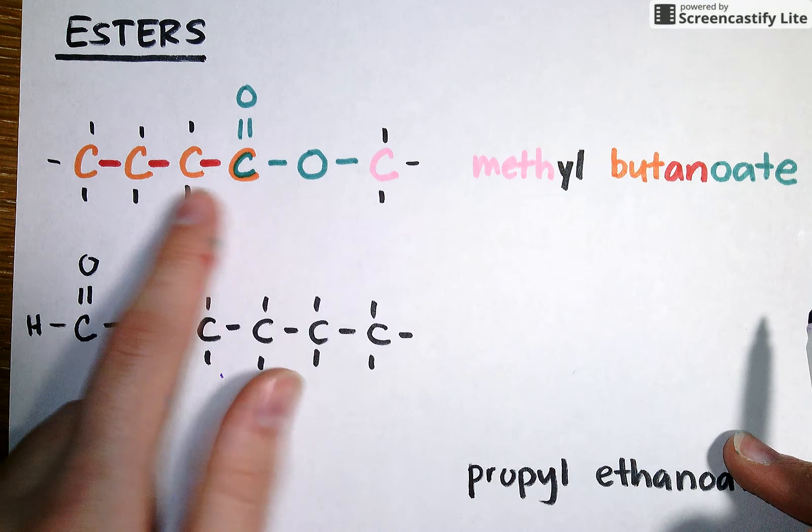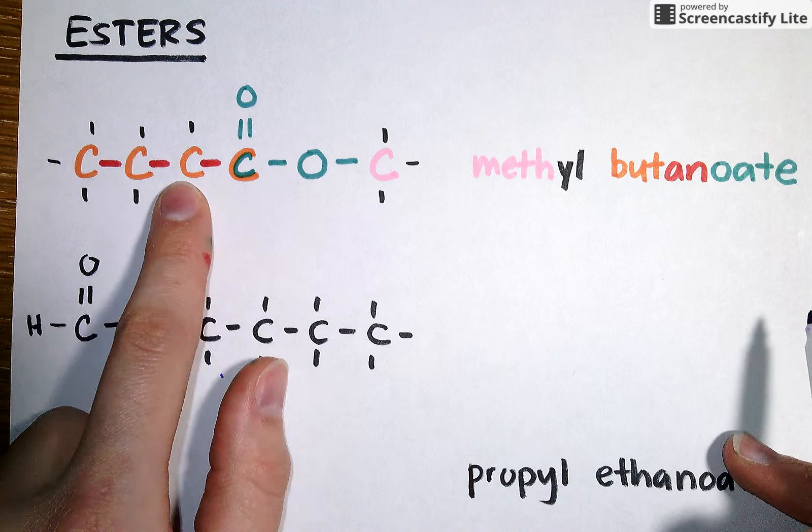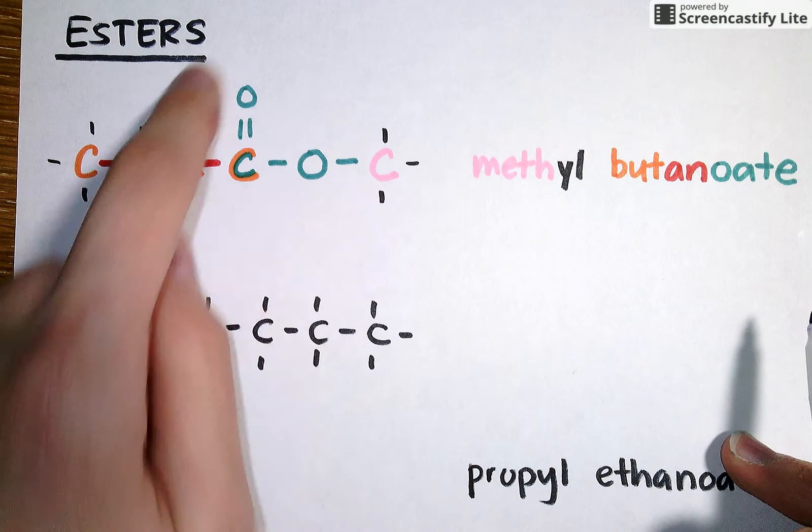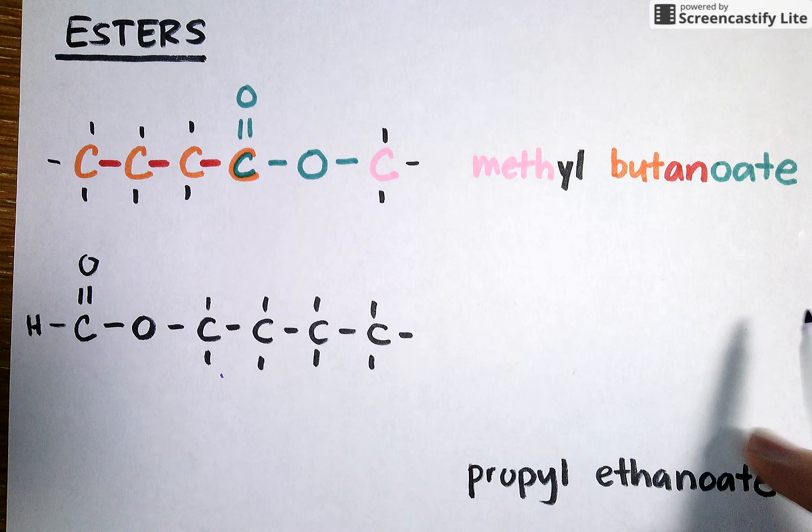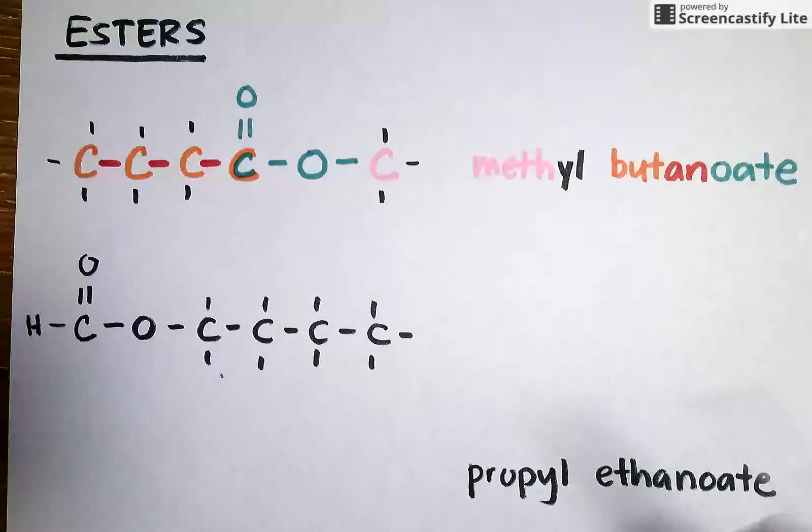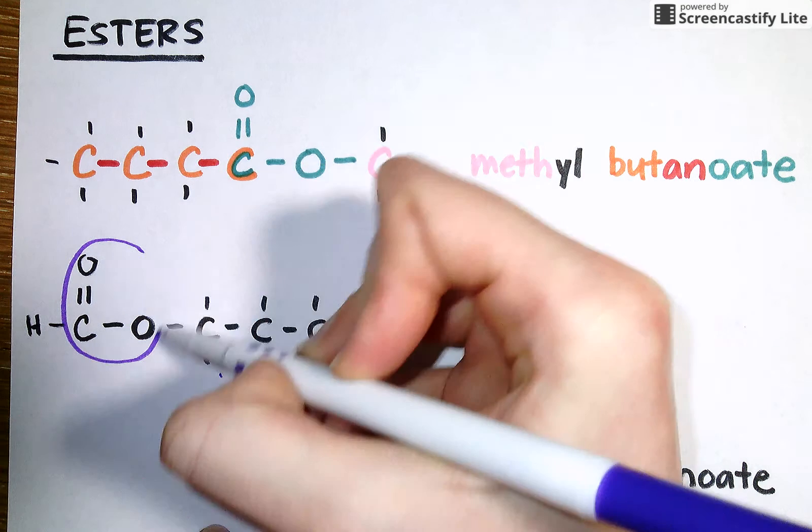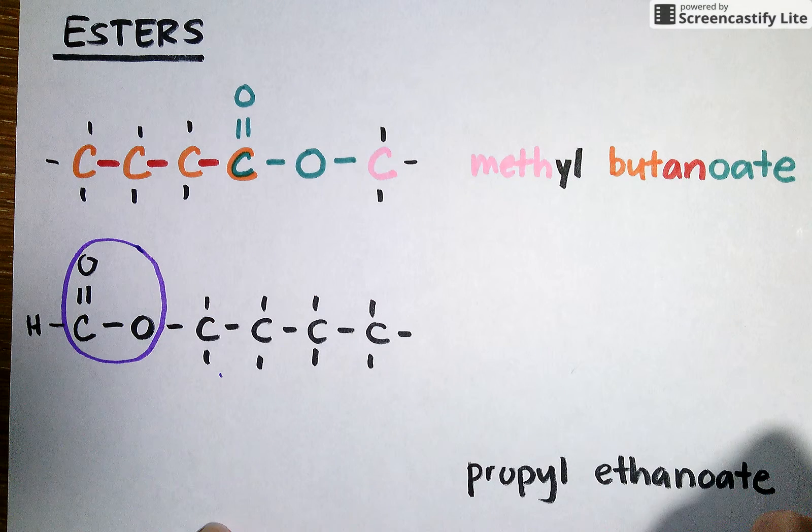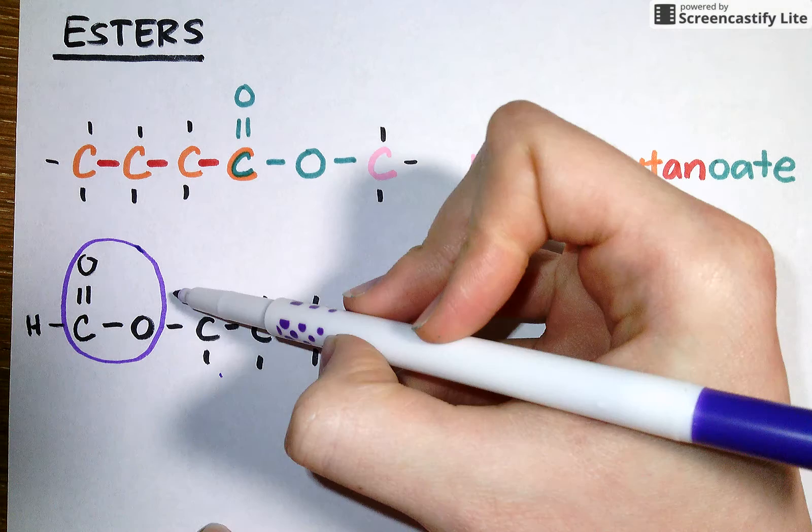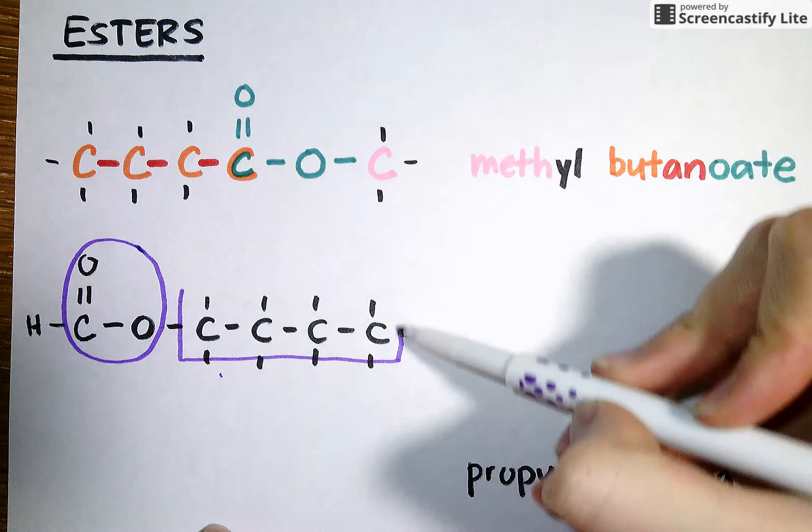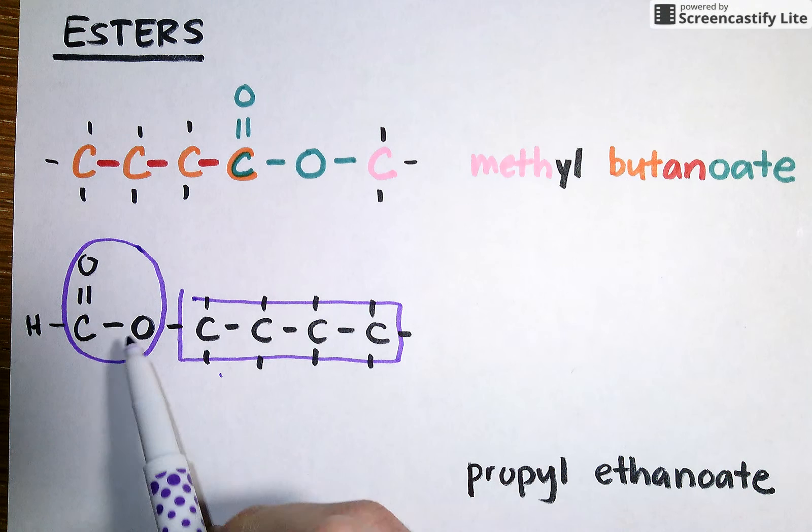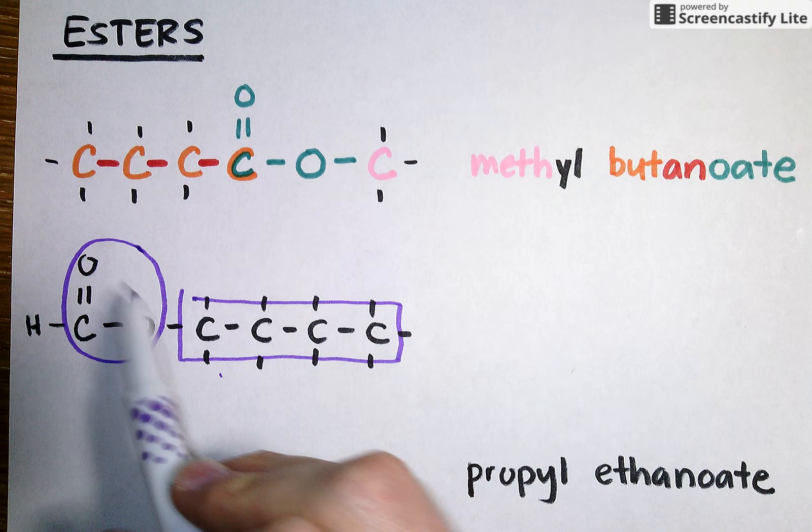Methyl from the pink, butane from the orange, and oate because of this green functional group. Let's try and name this compound right here. I'm going to try and put a circle around my functional group to show where it's dividing up my molecule. To the right, I see a four carbon chain. Since it's sticking off of that O and isn't associated with the double bond at all, I know this is going to be the first part of my name.